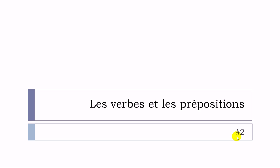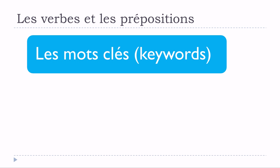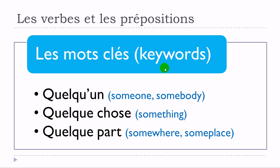We've got some keywords that I will use quite often when I explain the structures you can make with these verbs. The first one is quelqu'un — someone, somebody. Then quelque chose — something. And quelque part — somewhere, someplace. These will be quite useful. The first verb we will see together is appartenir.